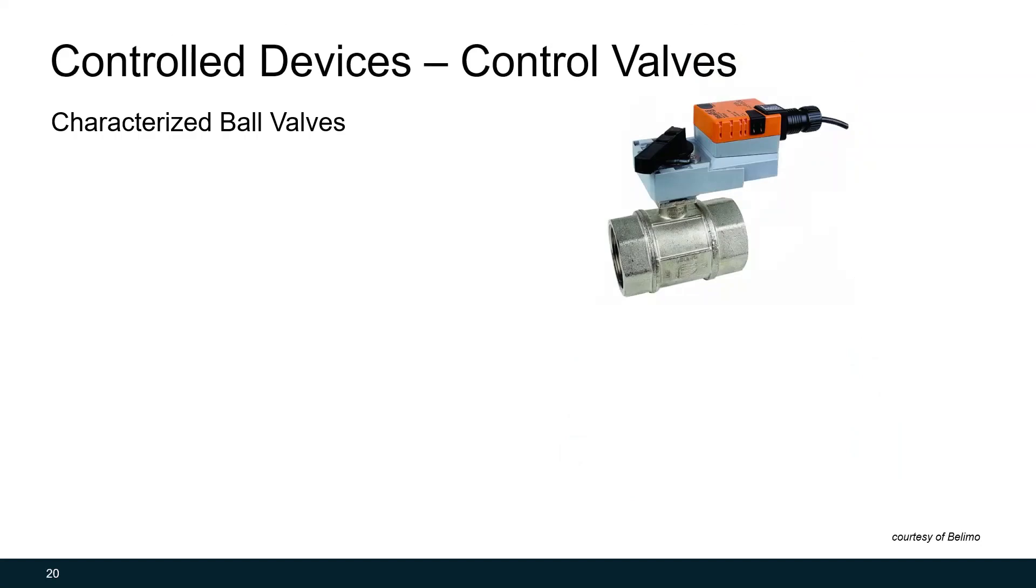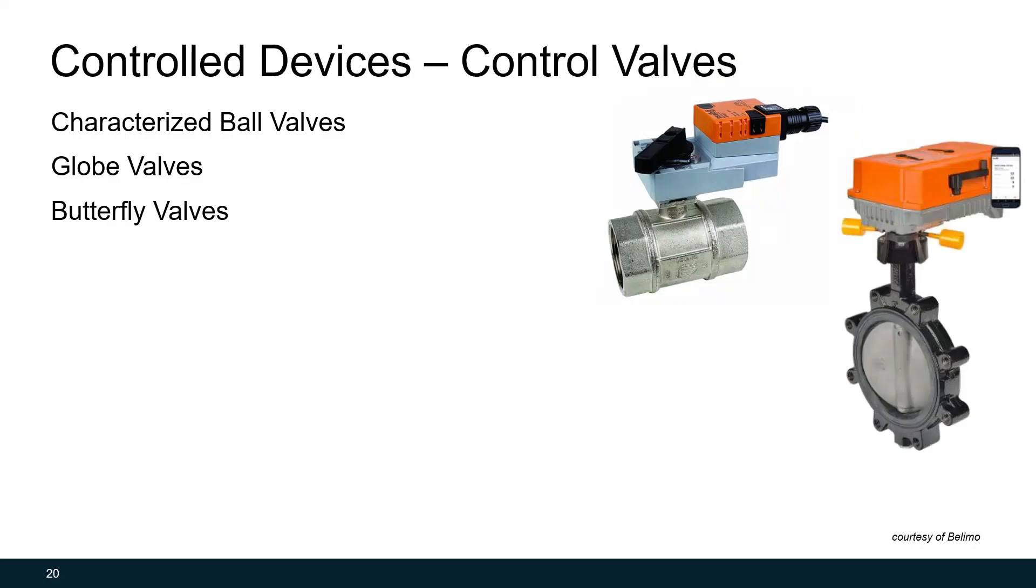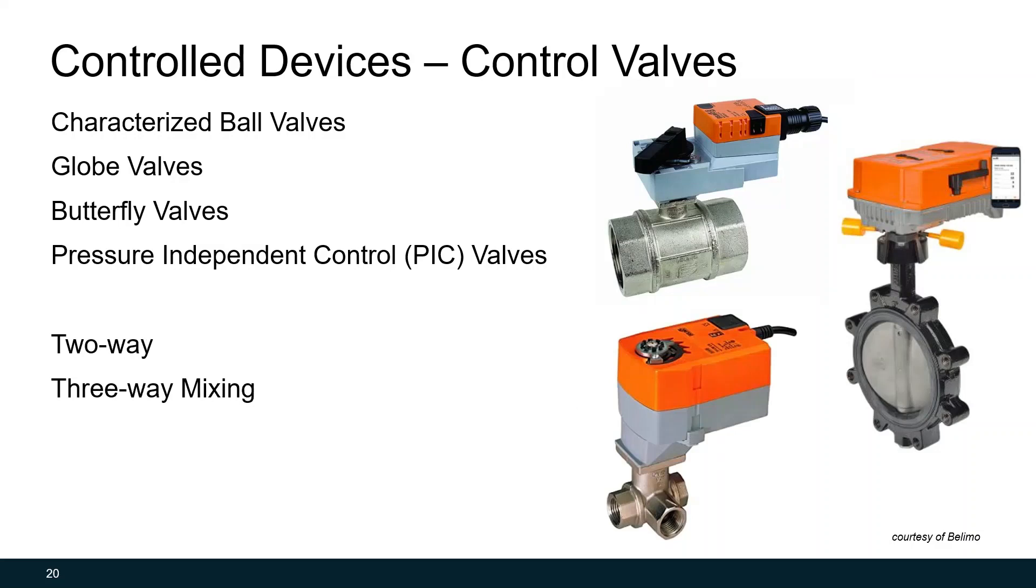Then there's control valves. There's many types of control valves, but most typically we use characterized ball valves for valves that are two inches and less. For four inches and less, you start to see globe valves. And for anything larger than that, you start to see larger butterfly valves. Another alternative for small pipe valves are pressure independent control valves. These valves are self-balancing and remove the cost for adding a separate balancing valve. The valves pictured here are two-way valves, but you can also get three-way valves. Three-way valves can be mixing or diverting. Mixing valves is where you are mixing two different fluid streams, whereas with diverting valves, you are picking between two different fluid flow paths.